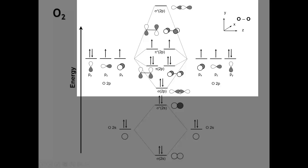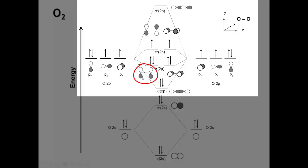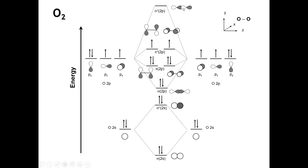Along the internuclear Z axis, the Pz orbitals overlap head-on to form a sigma bonding MO and a sigma anti-bonding MO. The Py orbitals overlap sideways (π overlap), so there's less overlap for the Py orbitals that form pi bonding and pi anti-bonding MOs than for the Pz orbitals that form sigma bonding and sigma anti-bonding MOs. The take-home lesson is: the more spatial overlap we have between two atomic orbitals, the larger the separation between the bonding and the anti-bonding MO.